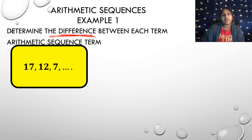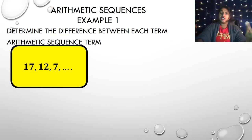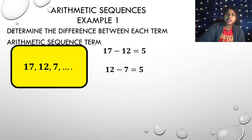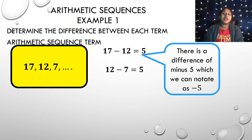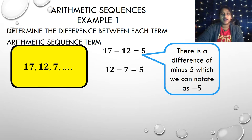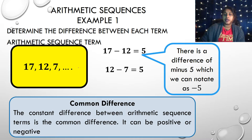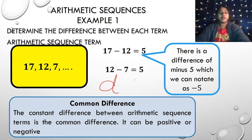Mathematically, we are finding the addition or subtraction occurring between terms. If I did 17 minus 12, I find that it's 5. If I do 12 minus 7, I also find that it's 5. There is a difference of minus 5, which we can notate as negative 5. This is called our common difference, represented by the letter D.